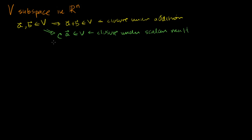A somewhat redundant statement is that V must contain the zero vector. The zero vector is a member of V — the zero vector with n components, because V is a subspace of Rn. This is redundant because if any scalar multiple of a vector is in V, I could just set the scalar to zero. Although that's redundant with closure under scalar multiplication, a lot of textbooks will always write it.